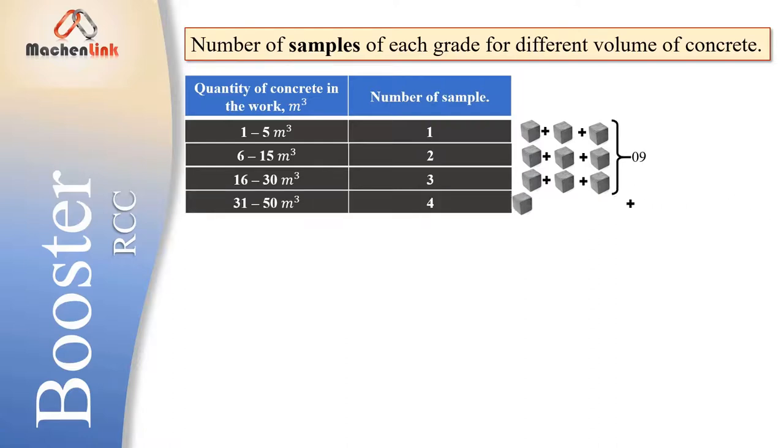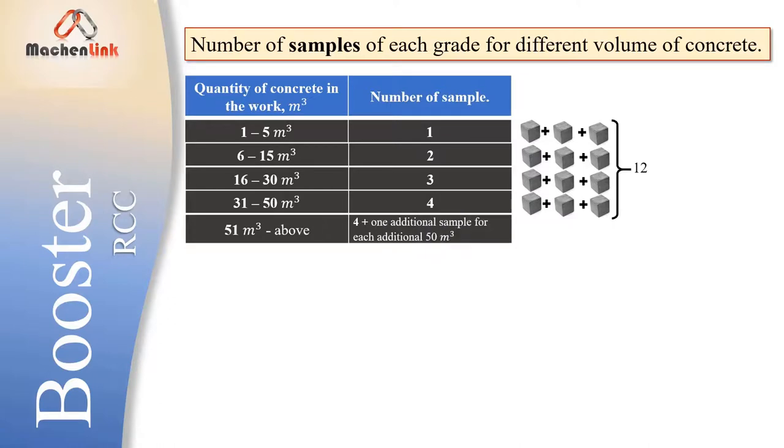And for 31 to 50 m³, 4 samples, total 12 specimens. And if volume of concrete is 51 m³ and above, then you have to prepare 4 plus one additional sample for each additional 50 m³. It means after 50 m³, if concrete volume reaches up to 100 m³, so 51 to 100 m³, the total number of samples are 5, so cubes will be 15.